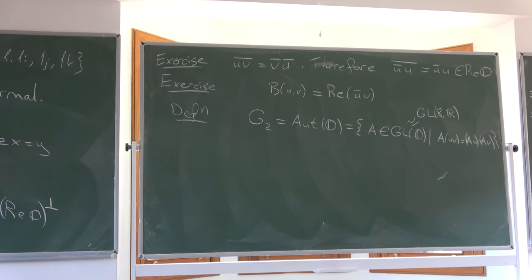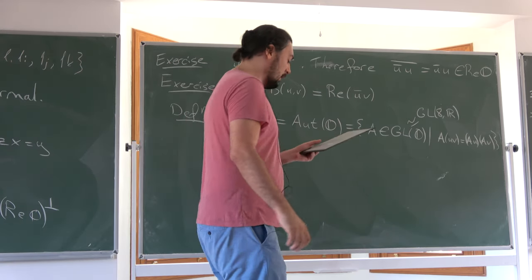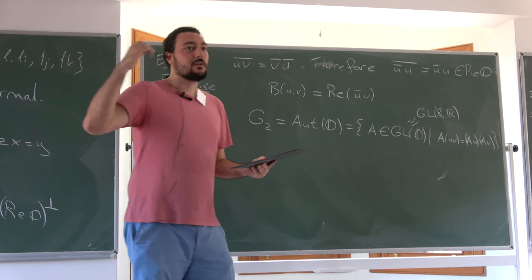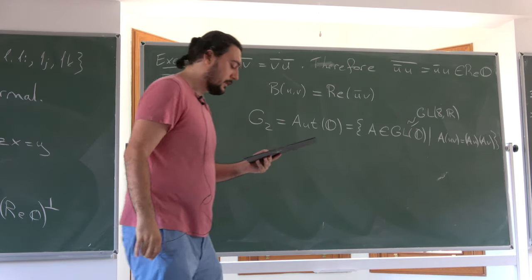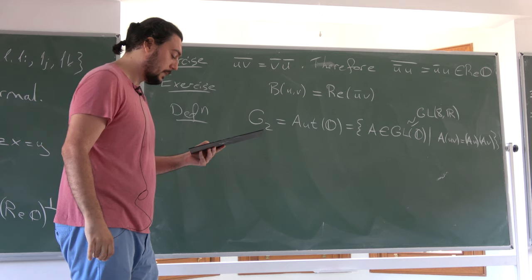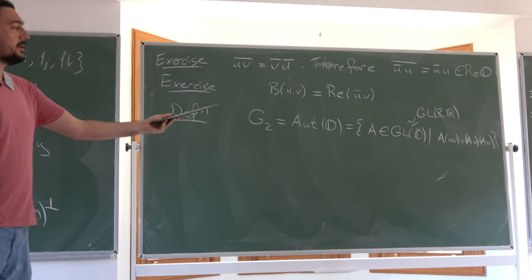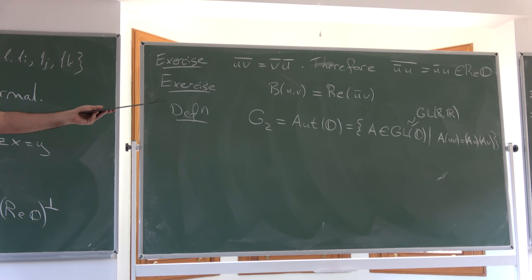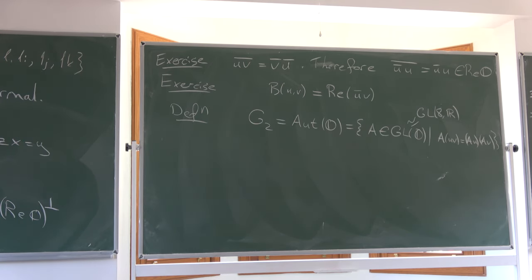Before stating topological corollaries, we need a proposition. If U and V are perpendicular imaginary Octonians, then U·V is also an imaginary Octonian, and moreover UV is perpendicular to both U and V. This is essentially saying we can use octonian multiplication to define a cross product structure.